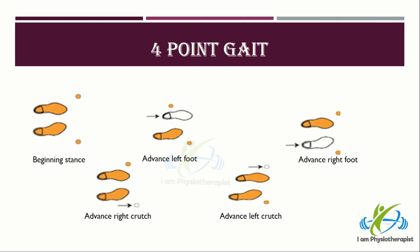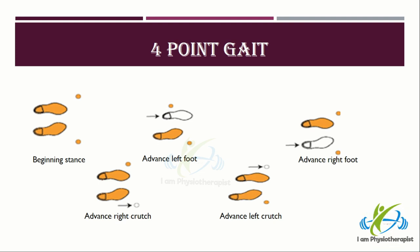Four-point gait pattern: a four-point gait pattern is used when the patient requires maximum assistance with balance. It requires the use of bilateral assistive gait devices — canes or crutches. The pattern begins with the forward movement of one assistive gait device, then the contralateral lower extremity, then the other assistive gait device, and finally the opposite lower extremity. For example: first move right crutch, then left foot, then left crutch, then right foot. This is a slow gait pattern, but a stable one.